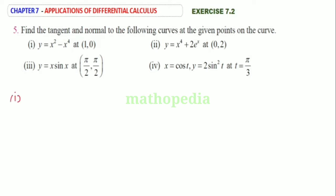First question: y equal to x square minus x power 4. Equation of tangent and normal — slope m. Therefore slope m is equal to dy by dx is equal to x square differentiate 2x minus x power 4 differentiate 4x cube.